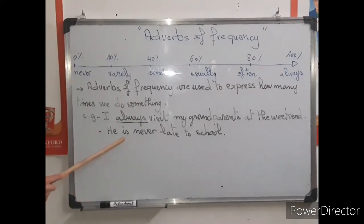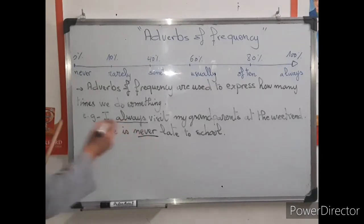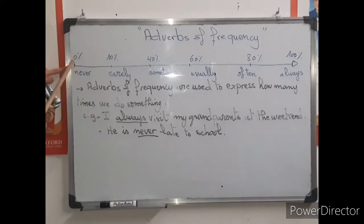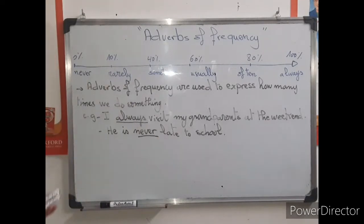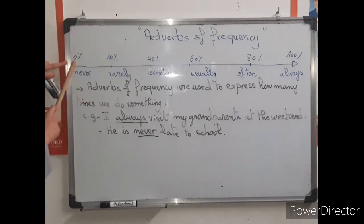The second example is: he is never late. Never is the adverb of frequency. When it comes to the line, we can see it's 0%. He is never late to school — which means he is always on time. He never comes late to school. So it's 0%.